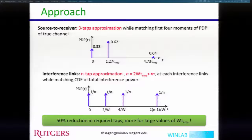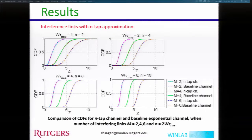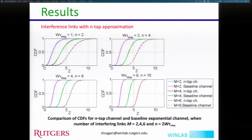Showing one example result for the interference link with N-tap approximation at M — number of interference links equal to 2, 4, and 6. We have taken different values of W times tau RMS, and for the N-tap approximation the CDFs are literally overlapping on top of each other, showing that this approximation gives really good accuracy.